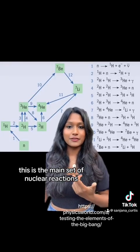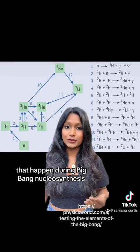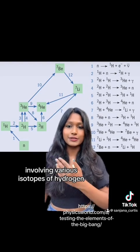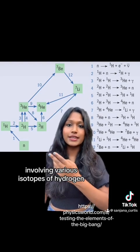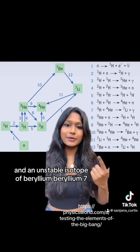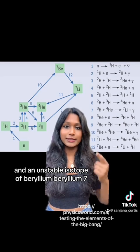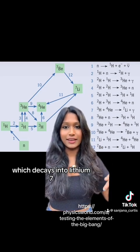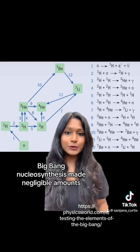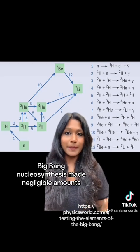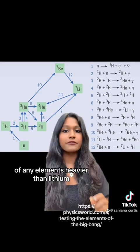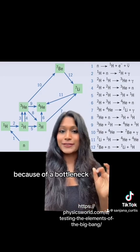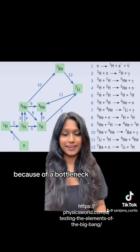This is the main set of nuclear reactions that happen during Big Bang nucleosynthesis, involving various isotopes of hydrogen, helium, lithium, and an unstable isotope of beryllium — beryllium-7 — which decays into lithium-7. Big Bang nucleosynthesis made negligible amounts of any elements heavier than lithium because of a bottleneck.